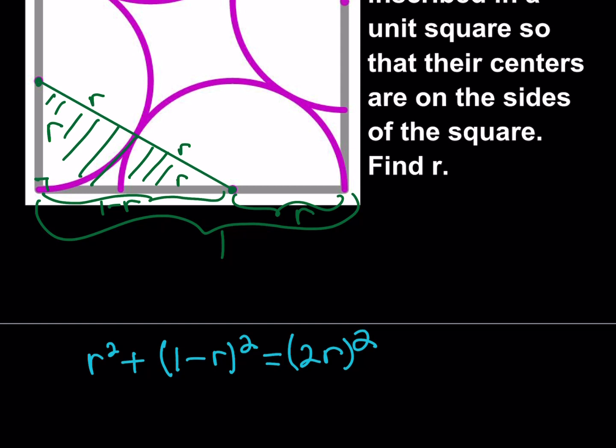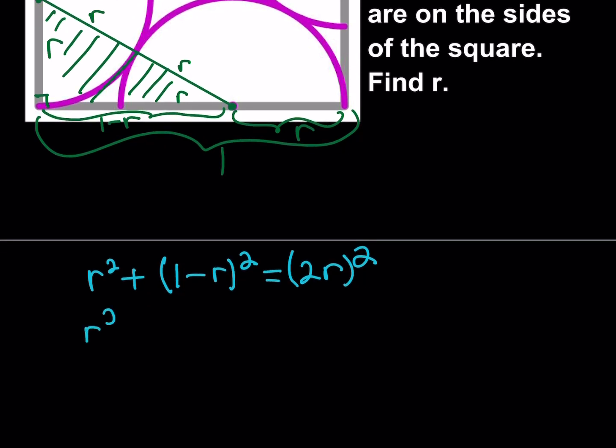It kind of looks straightforward even though it complicates things a little bit. So let's go: r² + 1 minus 2r plus r² and on the right hand side we should be getting 4r².